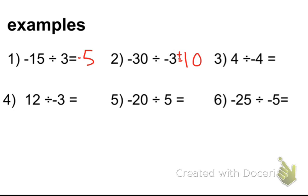If I have 4 divided by negative 4, I get 1. But it's a negative 1 because they have different signs, positive and a negative. 12 divided by negative 3 is going to be negative 4.